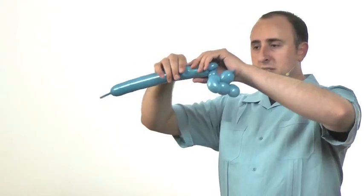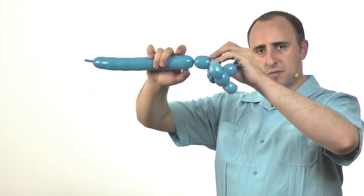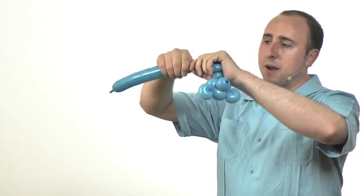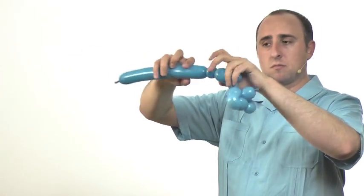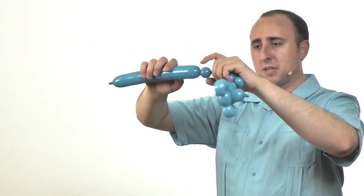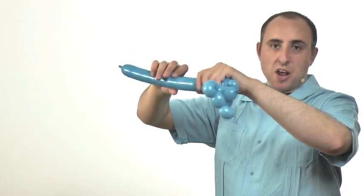Next step is we're going to twist the arms. That's going to be four bubbles. You're going to twist a section about an inch and a half to two inches, another bubble about half an inch, another half inch bubble, and another bubble about inch and a half to two inches.